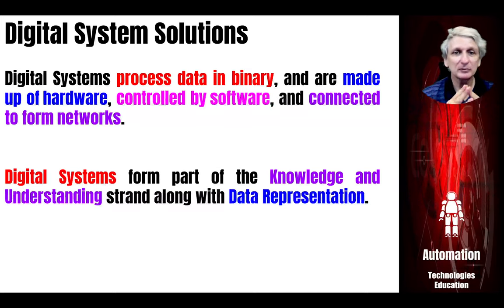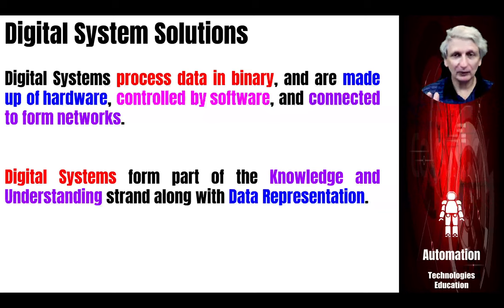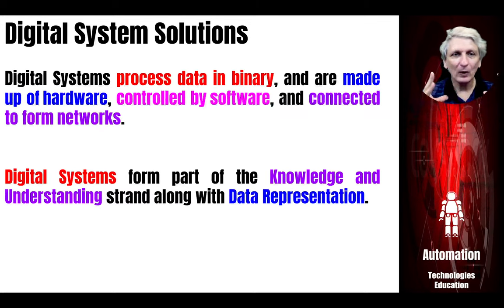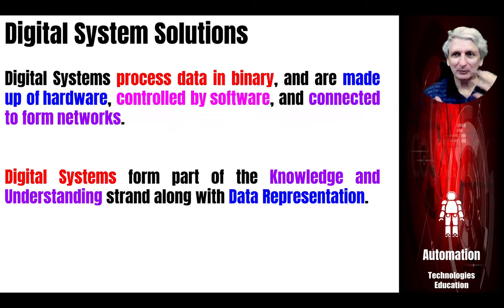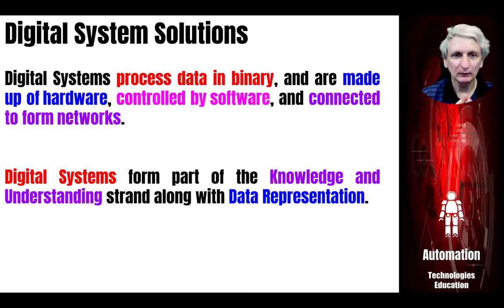Digital systems are also made up of hardware — devices controlled by software, the instructions we place on devices to have them do different things — and they're often connected to other devices through networks. So the four aspects that make systems digital are: some sort of binary processes or binary data being processed, hardware devices, software, and connection to a network of devices.